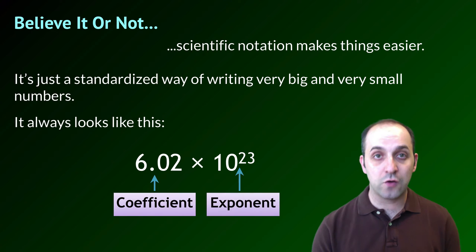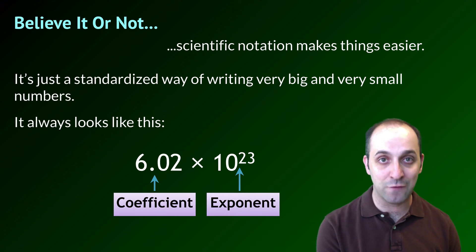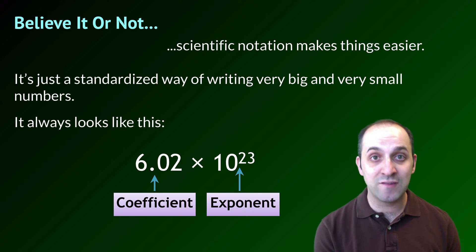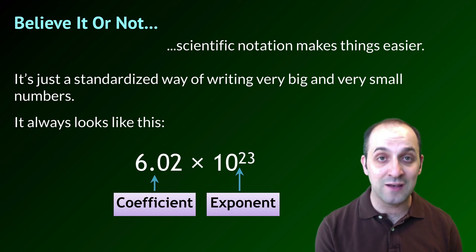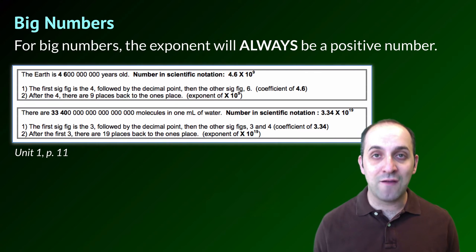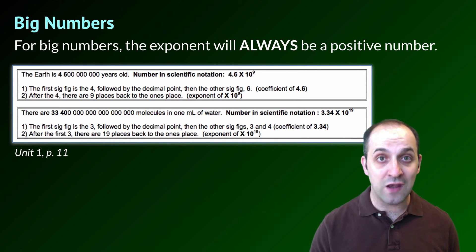The other part of the scientific notation is the exponent. This represents the number of times we would need to multiply our coefficient by 10 in order to turn it back into its non-scientific version. 6.02 times 10 to the 23rd is that number that we started with rewritten in scientific notation. Big numbers are always going to have a positive integer as their exponent. The power of 10 is always going to be greater than 0.